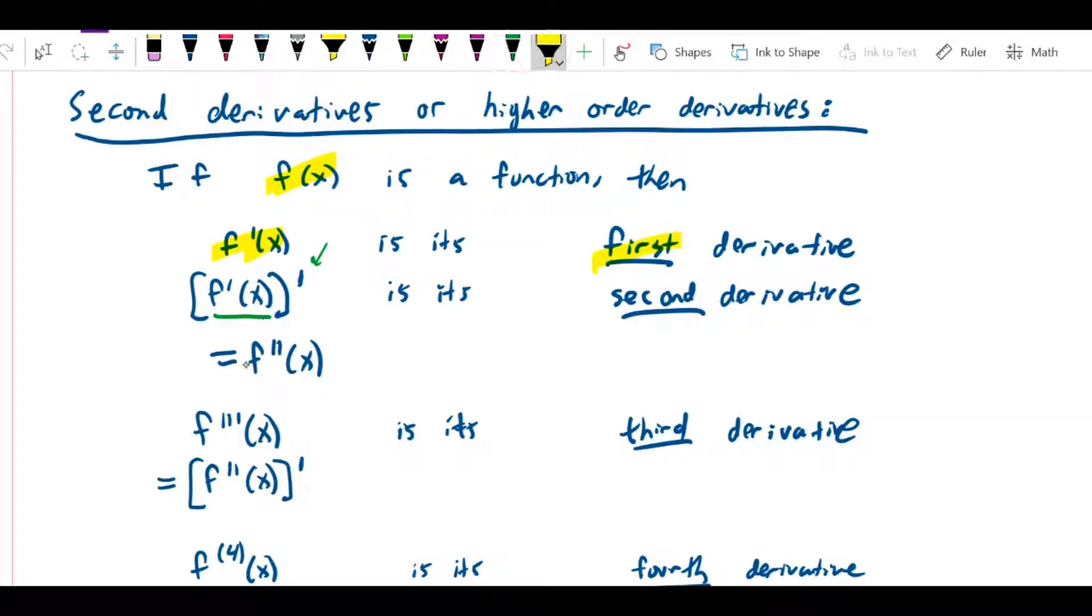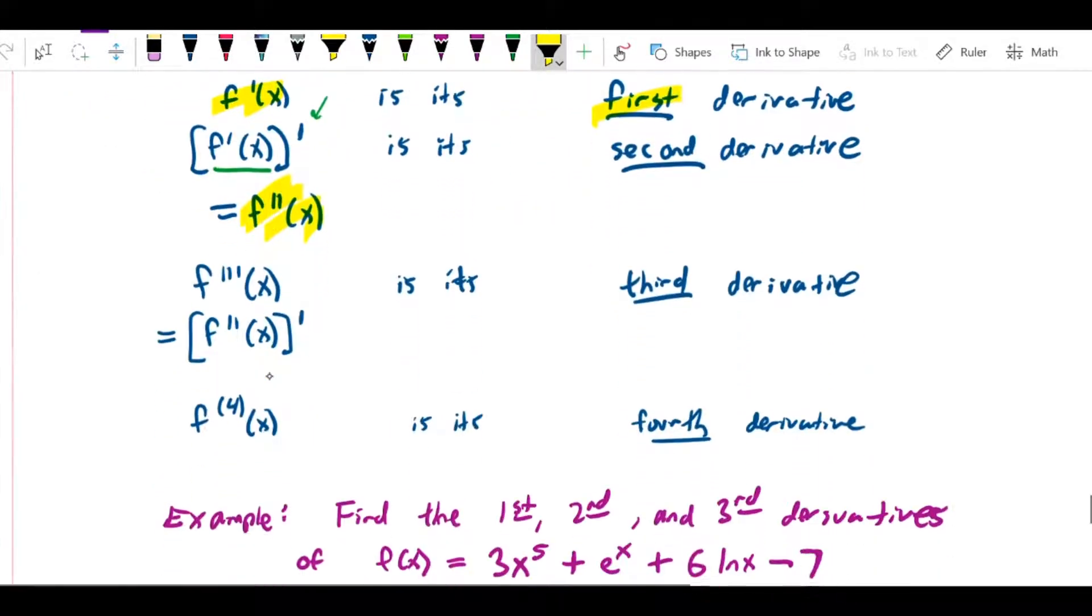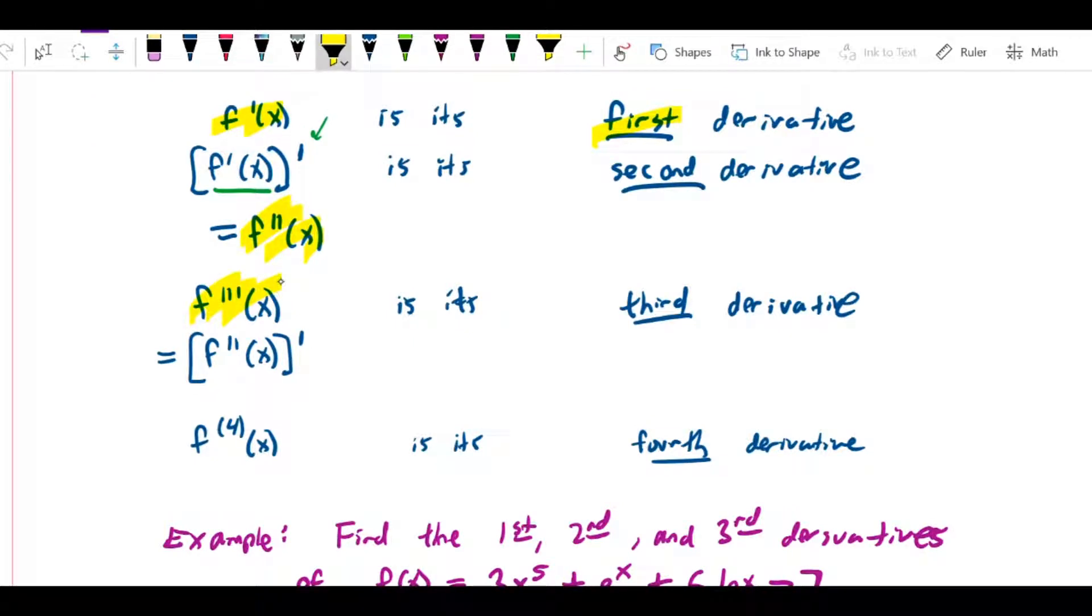We normally write that as f''(x) instead of f'(x). Similarly, we have f'''(x), which is the third derivative of the function. That's when we take the function's second derivative and take its derivative again. We can keep going, and these are all called higher-order derivatives.